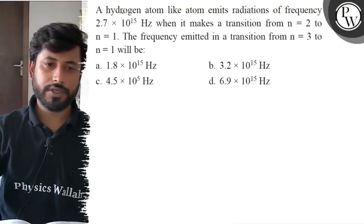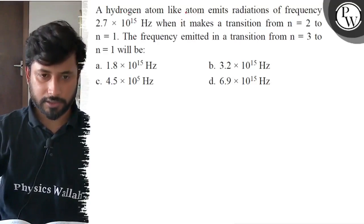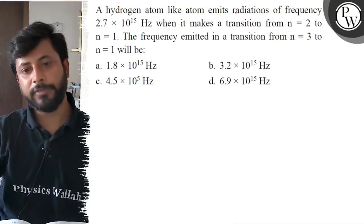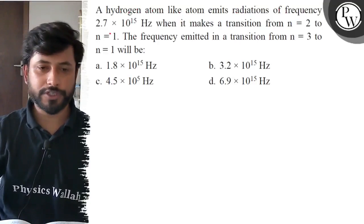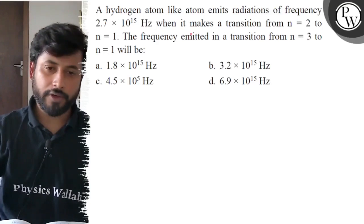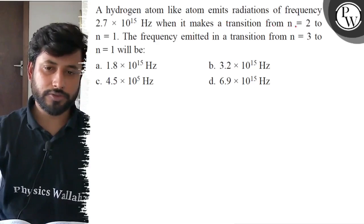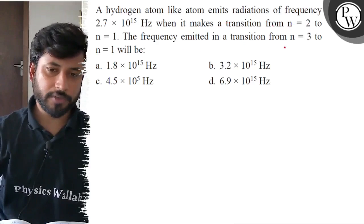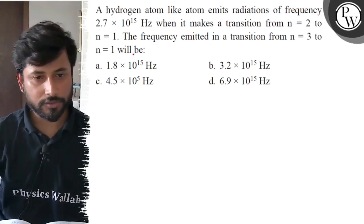Hello, let us see this question. A hydrogen atom like atom emits radiation of frequency 2.7 into 10 to the power 15 hertz when it makes a transition from n equals 2 to n equals 1. The frequency emitted in transition from n equals 3 to n equals 1.